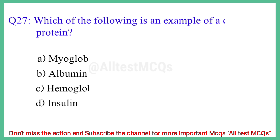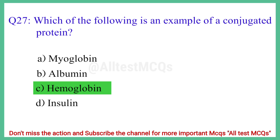Question No. 27: Which of the following is an example of a conjugated protein? The correct answer is option C: Hemoglobin.